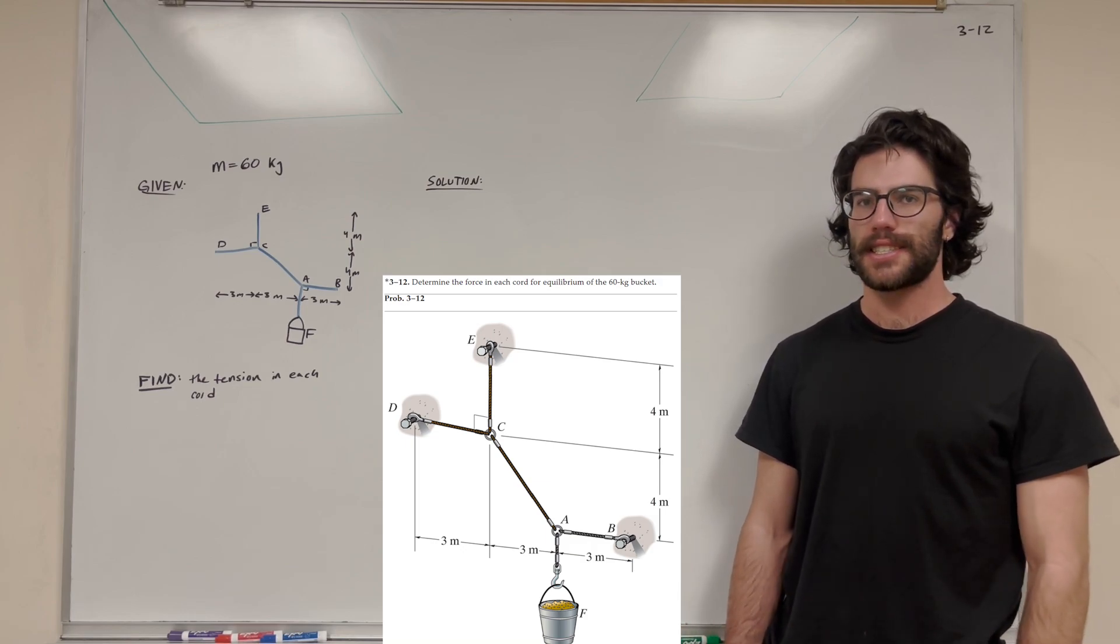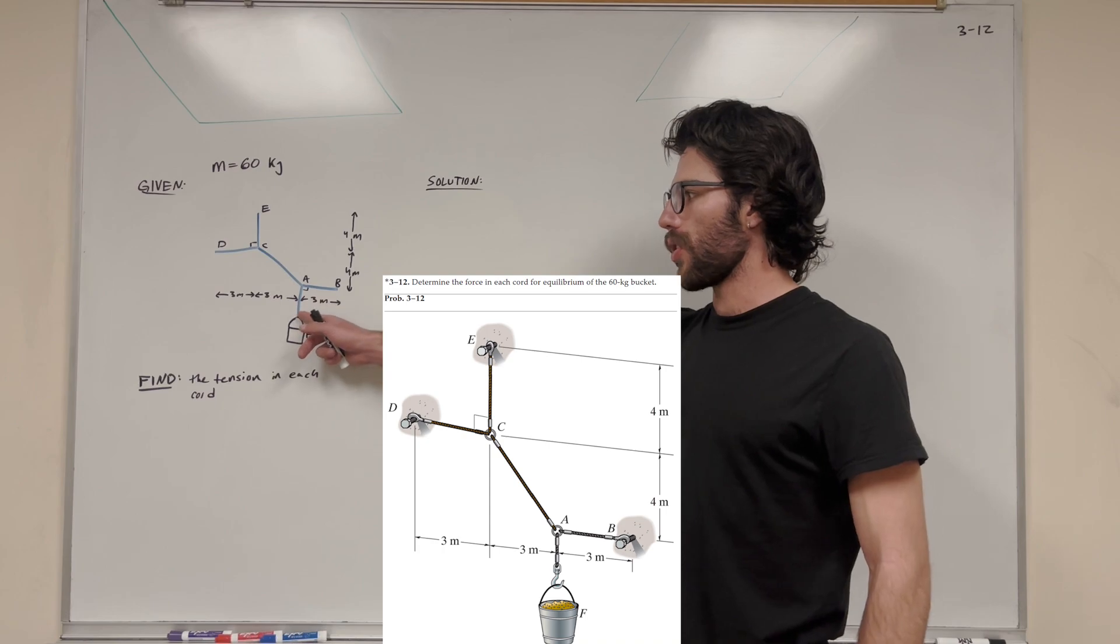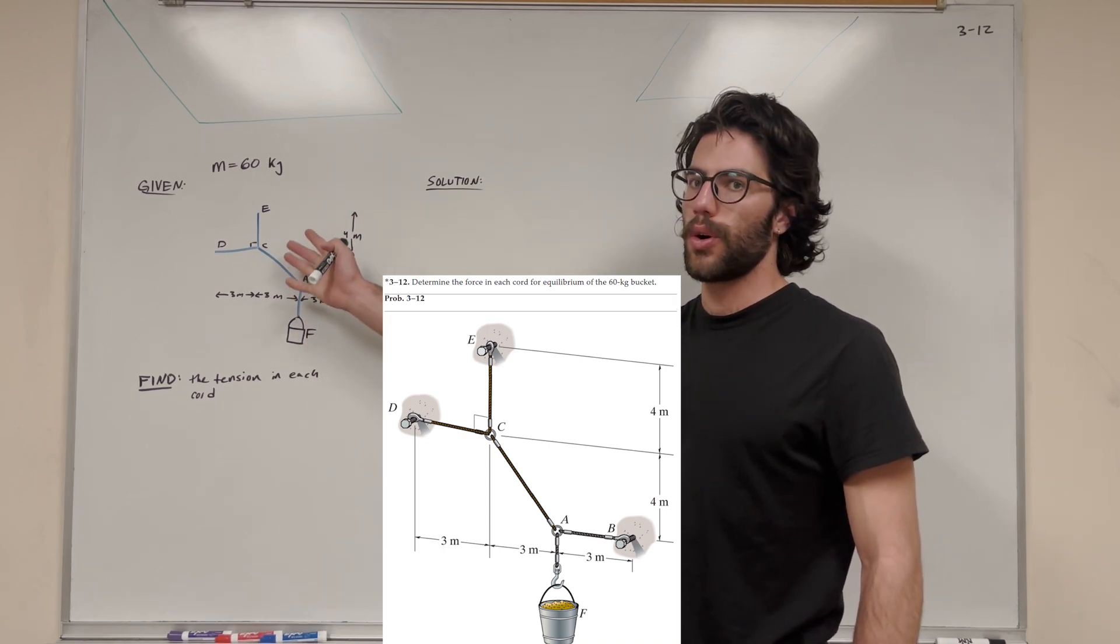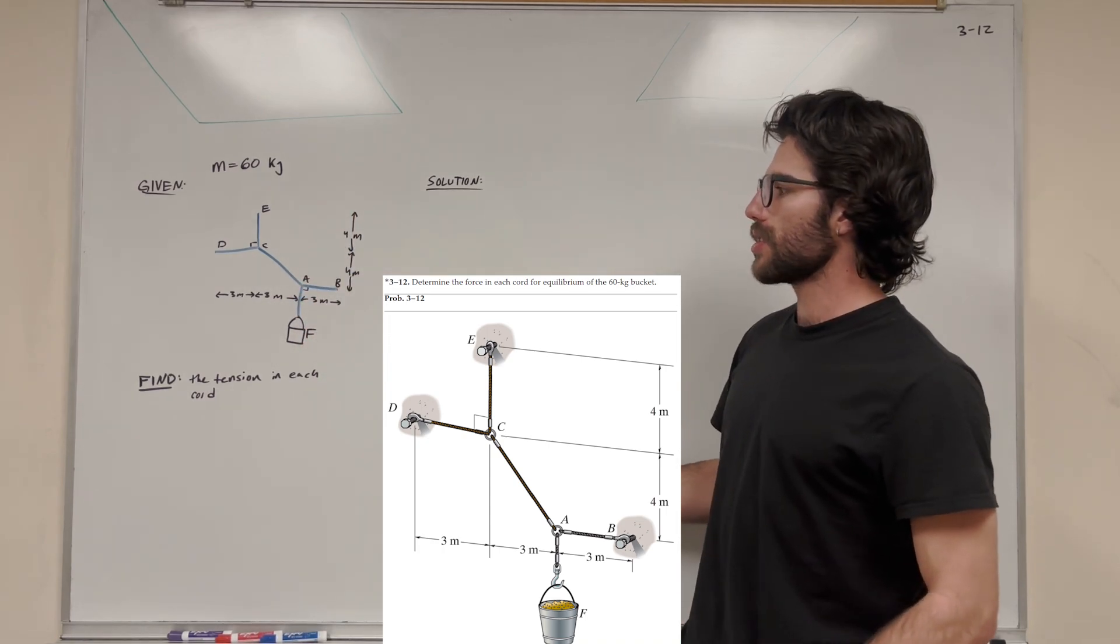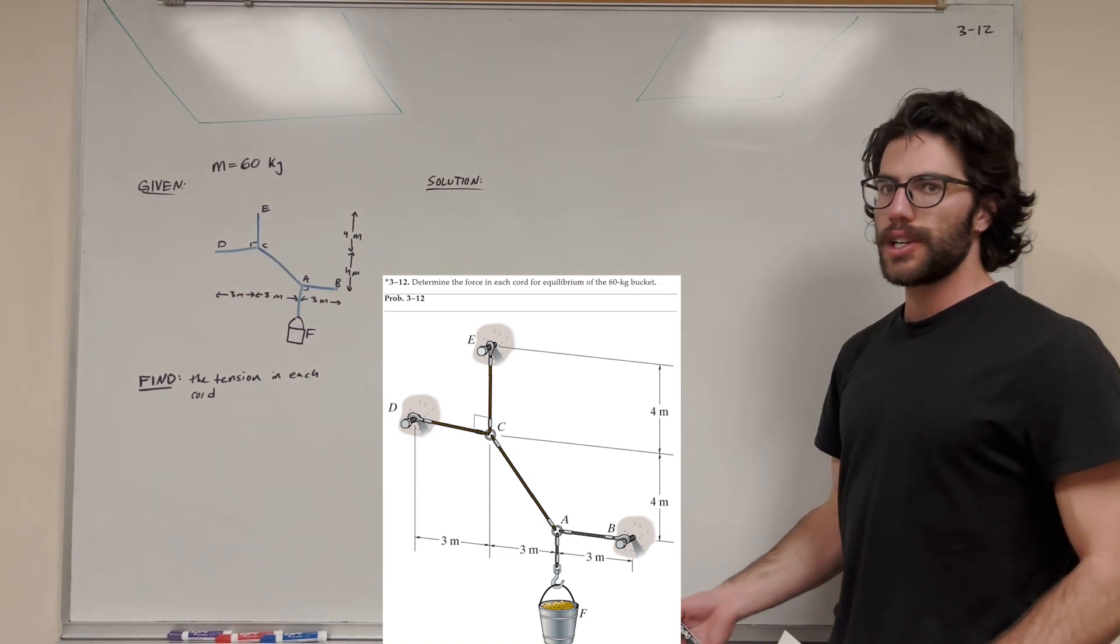What's up, CodeGang? Welcome back to Statics. Let's solve this problem here. So what do we have? We have a bucket hanging on a cord, and it's attached to five cords, basically. Our goal is to find the tension in each cord when the mass of this bucket is 60 kilograms. So let's go ahead and do that.